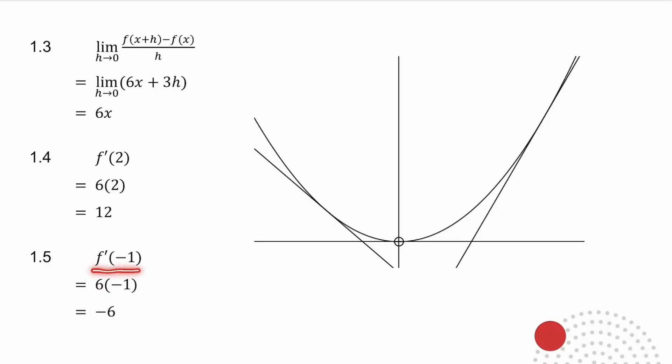What if I ask you for f'(-1)? So that means I want the gradient of the curve at x equals minus 1. So I want the derivative at minus 1. There's the formula for the derivative at any point. So the derivative at minus 1 is 6 times minus 1, which is minus 6.